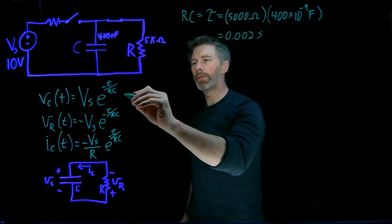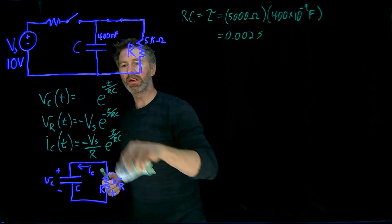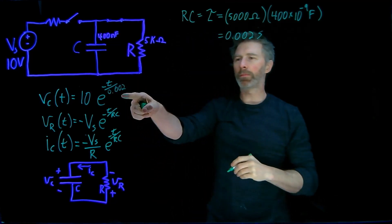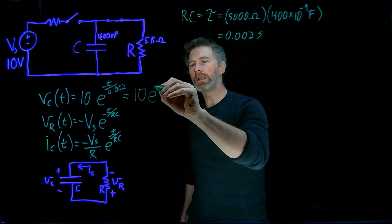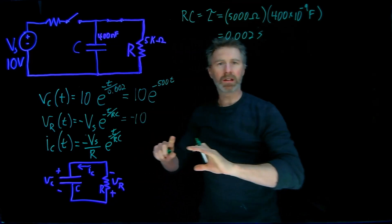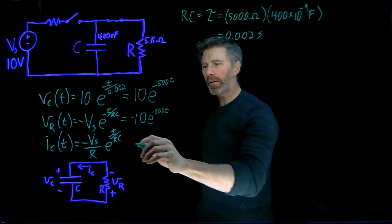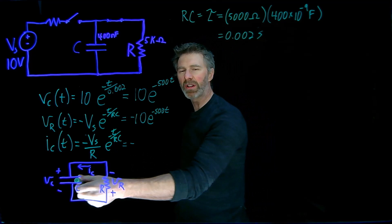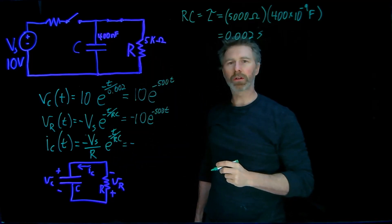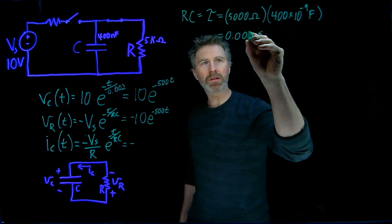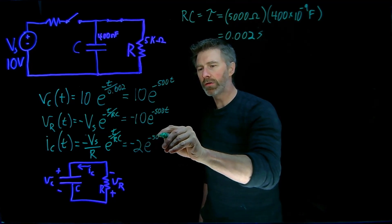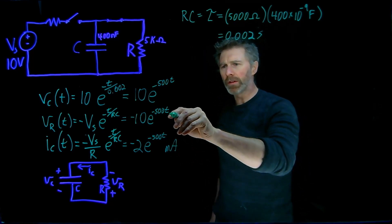Now we can plug these numbers into the actual expressions. VC of T: the initial voltage is 10 and RC is 0.002, so bringing 0.002 to the top gives us 10 times e to the negative 500T, since the inverse of 0.002 is 500. VR of T is basically the same thing, except the polarity is opposite from the capacitor voltage. For the current, we defined the current direction as negative, so IC is negative 10 volts divided by 5 kilohms. Ten over 5,000 is 0.002, which is coincidentally the same as the time constant value — that's 2 milliamps. So IC equals negative 2 times e to the minus 500T milliamps. The units for the voltages are, of course, volts.